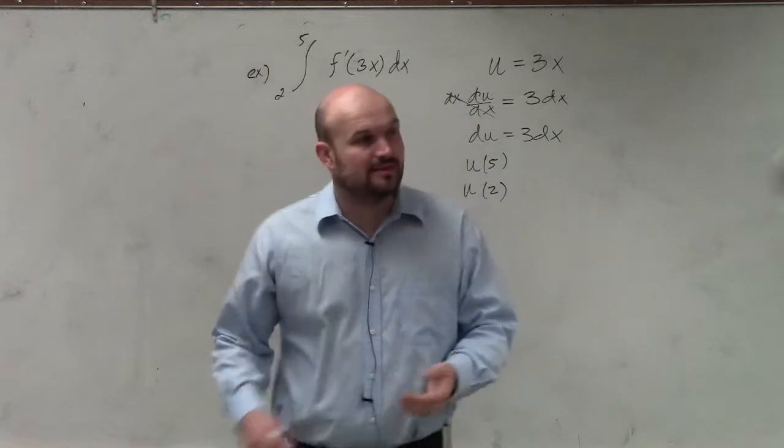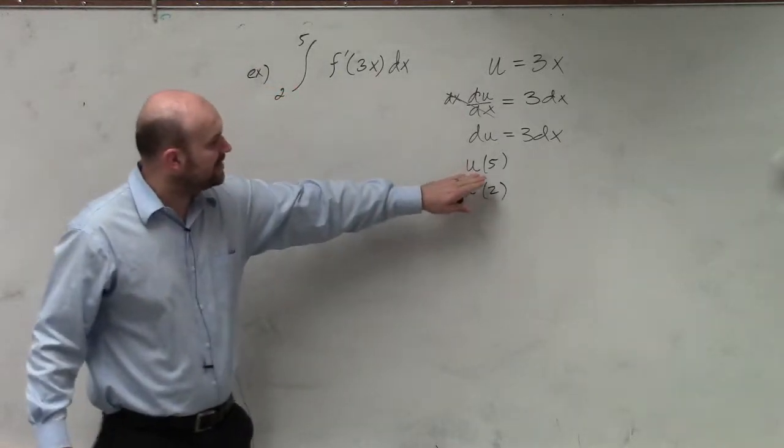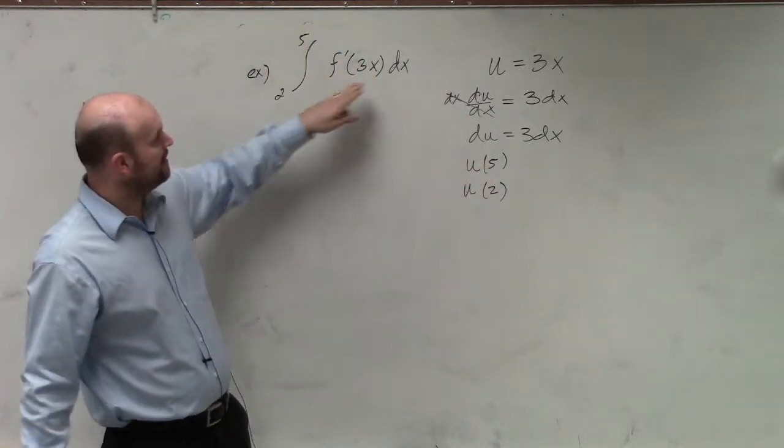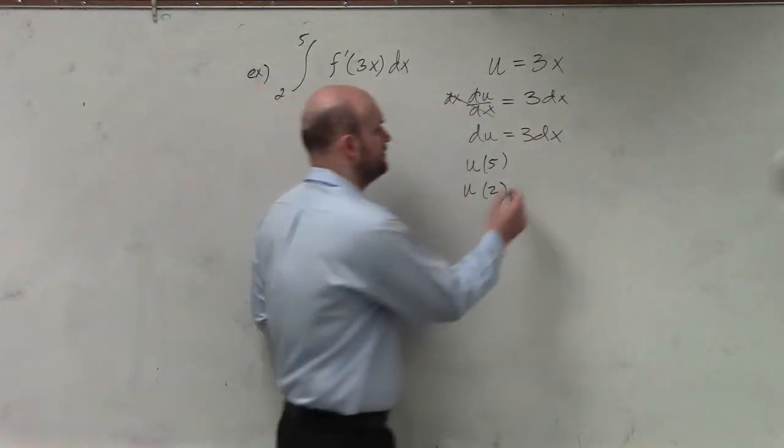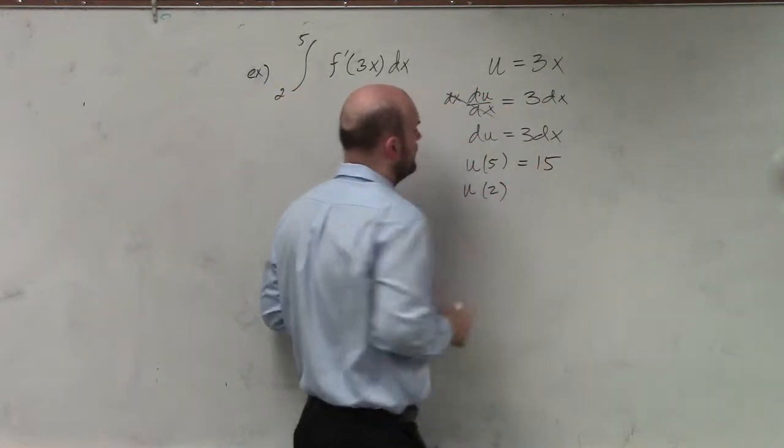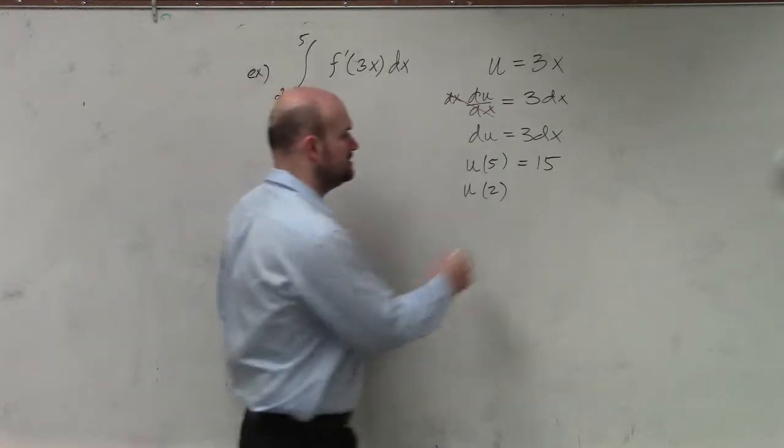So to do that, what we're going to do is take our value of our lower and upper bound and plug them into u. So u(5) is going to equal 15, and u(2) is going to equal 6.